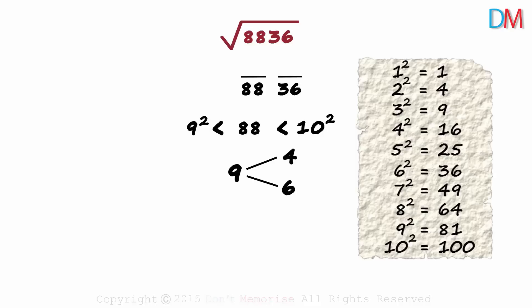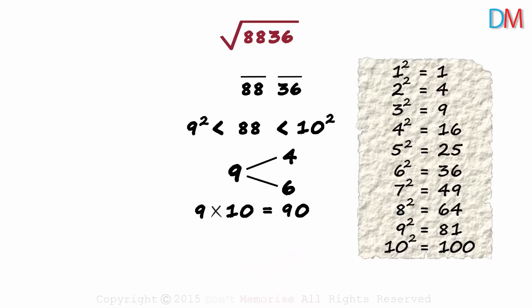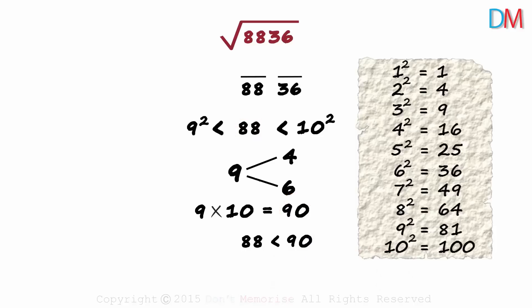To find that, we multiply the 10th digit with its successor. That will be 9 times 10 which gives us 90. Once this is done, we compare this number in the middle with 90. 88 as we can see is clearly less than 90. And that is why we take the lower number 4.